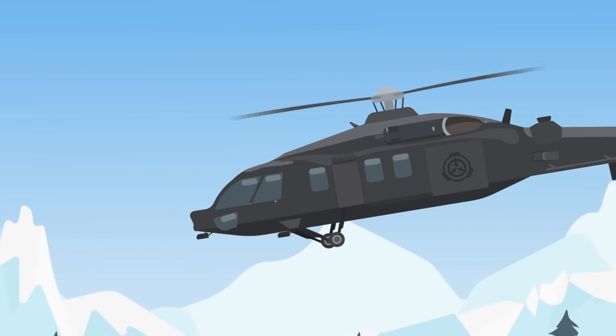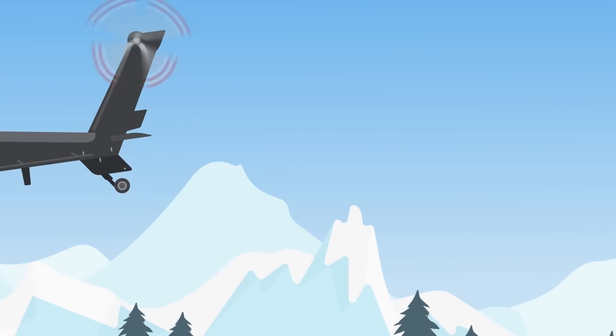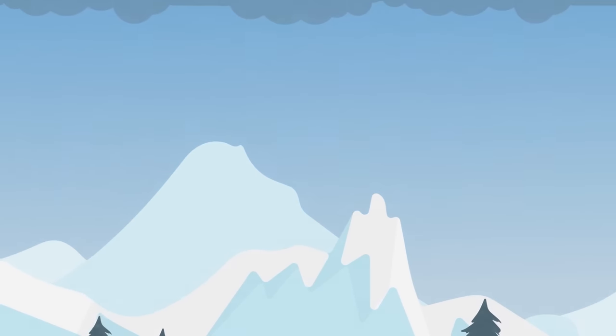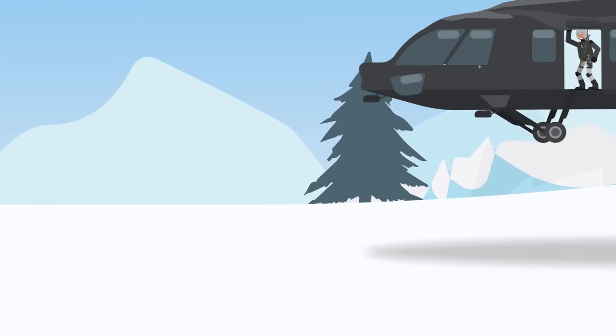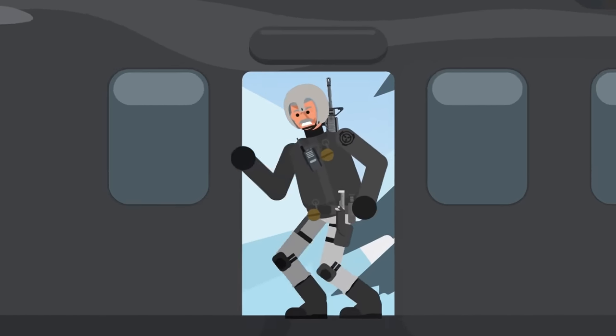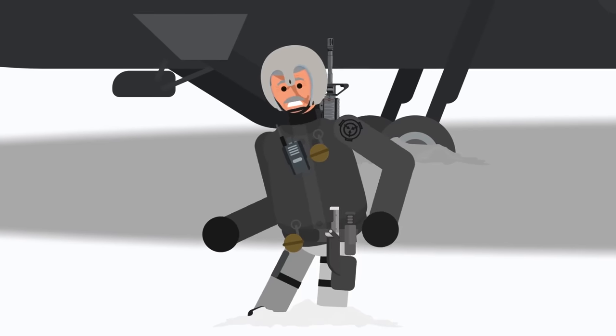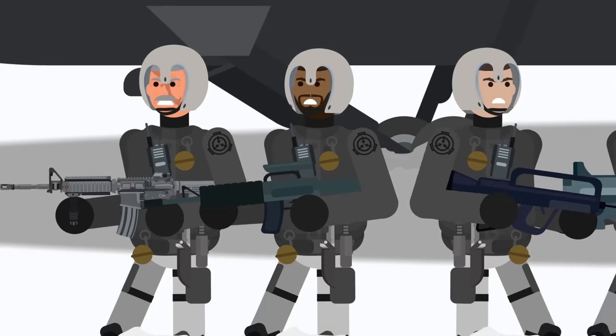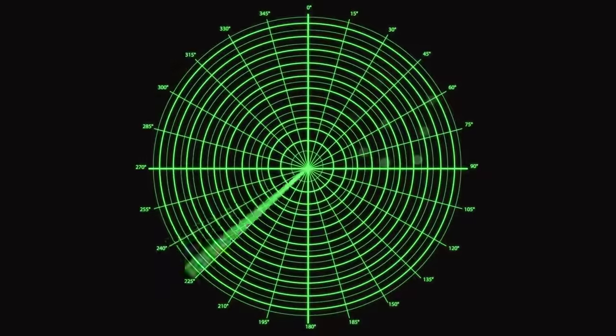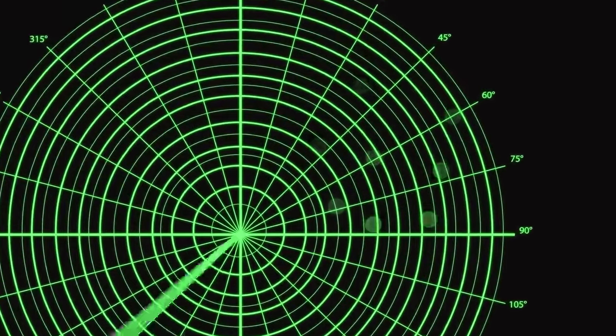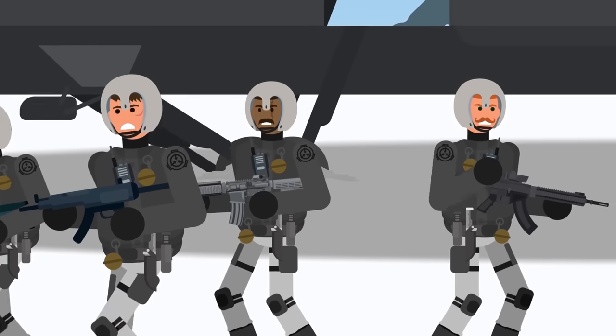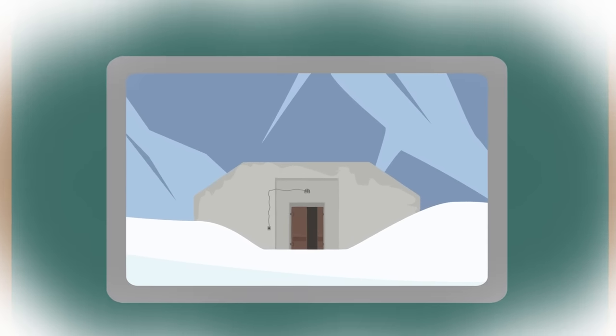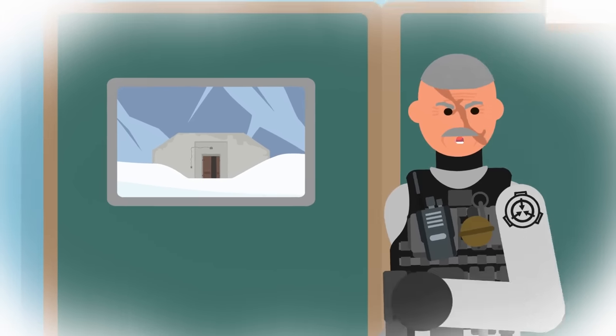The helicopter lurched and rumbled as it made its descent through the Verkhoyansk mountain range. Conditions were harsh, with fierce winds ripping through the valleys. At any point, a blizzard threatened to strike. Just about managing to touch down, Mobile Task Force Lambda-9 was glad to be out of the vehicle, even if it meant stepping into knee-deep snow.